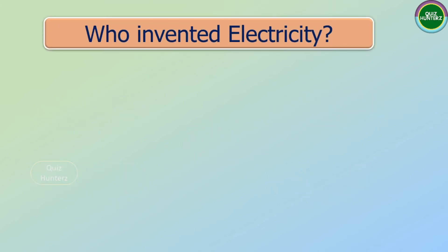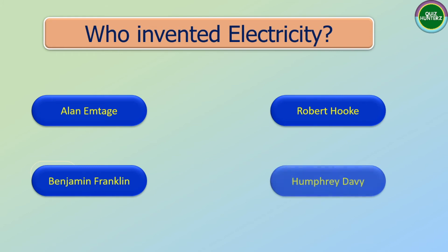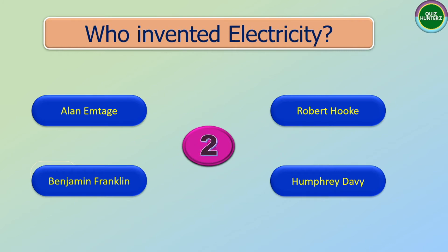Next question: Who invented electricity? The options are: Alan M. Turing, Robert Hooke, Benjamin Franklin, Humphrey Davy. And the correct answer is Benjamin Franklin.